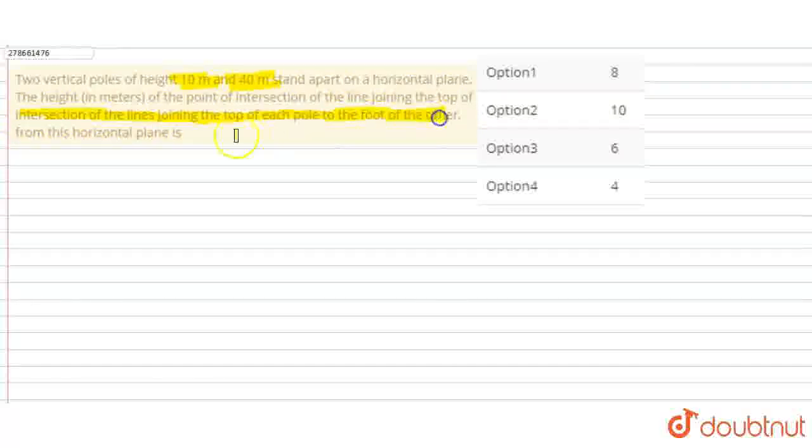The question asks about two poles: the height in meters of the point of intersection of the line joining the top of each pole to the foot of each pole from the horizontal plane. So what we can say is this simple thing. This is a pole and another pole which is 40 meters long.